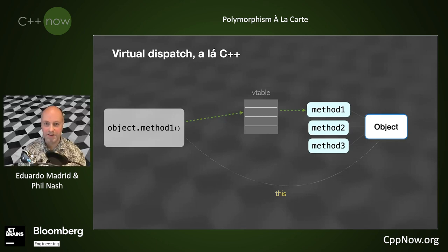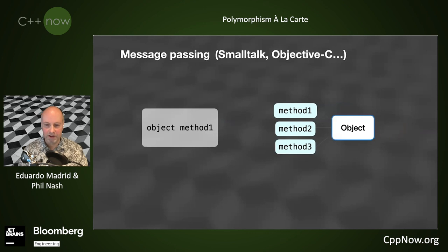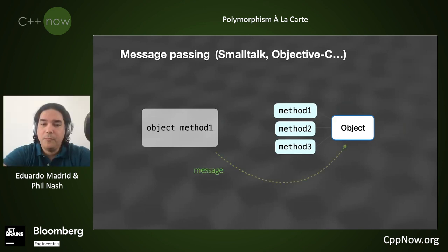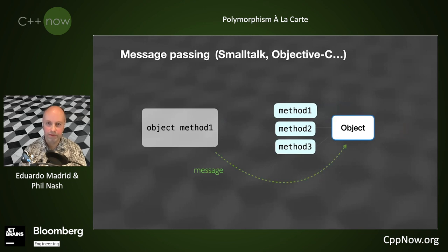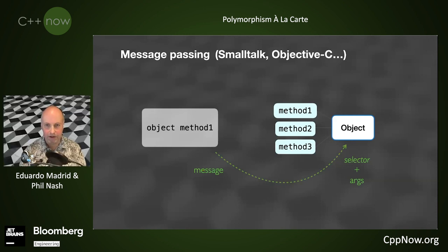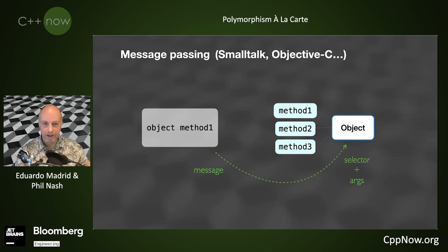In message passing, what you're doing is passing a message to the receiver — the object you're calling the method on. That message is what we call a selector, plus the set of arguments. The object itself uses the selector to locate the method and make the call, which resolves down to a function call. But because the object gets there first, it can do something different. Most of the time it just calls the method, but now you've got extra dynamism.